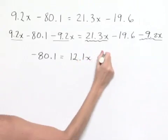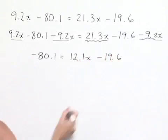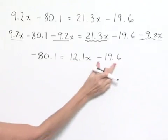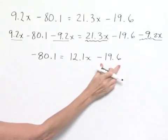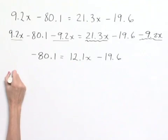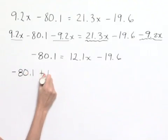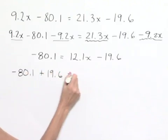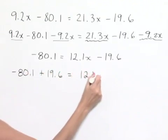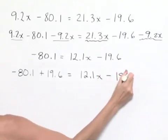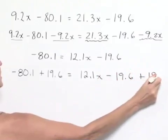And then we have our minus 19.6, which we carry down. Now we want to isolate the terms that have an x in them, so we're going to add 19.6 to both sides of this equation. In our next step we'll have negative 80.1 plus 19.6 equals 12.1x minus 19.6 plus 19.6.